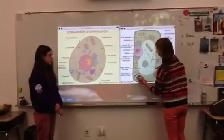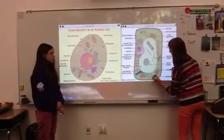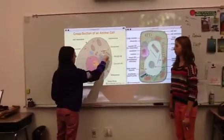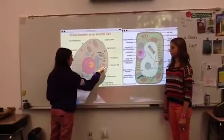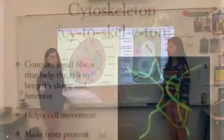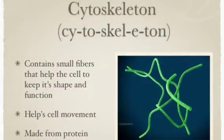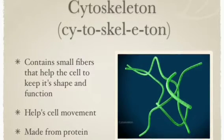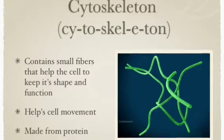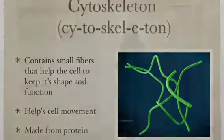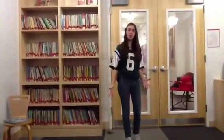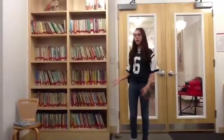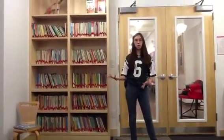This is where the cytoskeleton is inside the plant cell, and this is where the cytoskeleton is inside the animal cell. The cytoskeleton contains small fibers that help the cell keep its shape and function. It also helps the cell's movement and is made from protein. Imagine this room as a plant or an animal cell — the material inside the walls would be like the cytoskeleton because they help the walls keep their shape and structure.